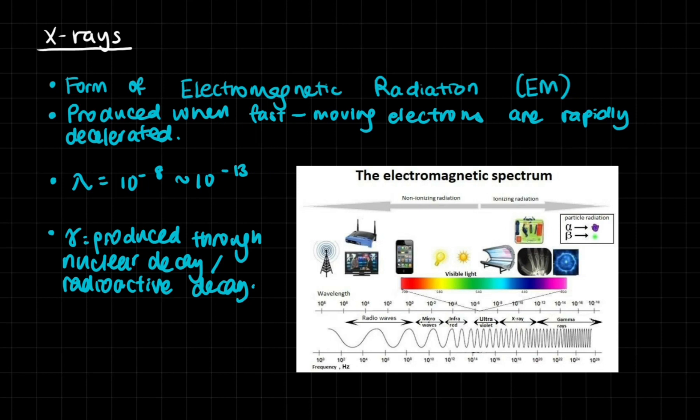So that is how x-rays are produced and on the contrary, gamma rays are produced through nuclear decay or radioactive decay, which you may already know if you've studied any form of nuclear physics. There are three main types of radiation for nuclear physics. There is alpha radiation and there's beta radiation and there's also gamma radiation.